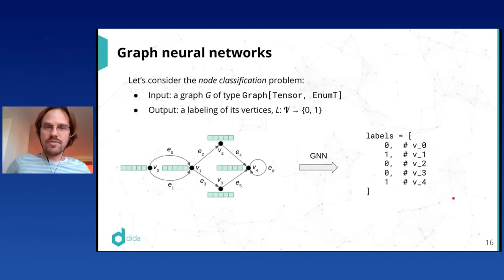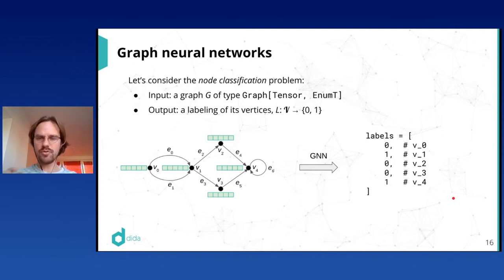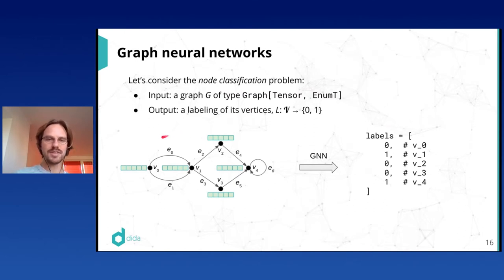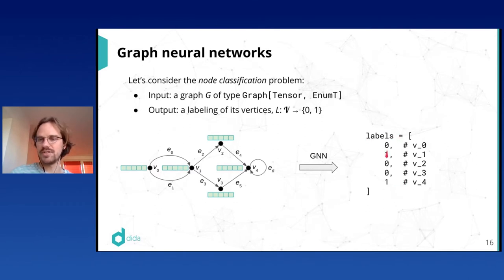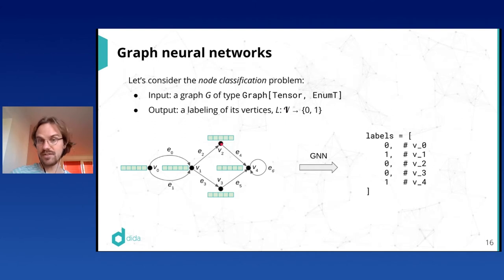Now we can get to graph neural networks. To discuss this, I'll fix one kind of problem: the node classification problem. We give as input a graph, and we want to output a labeling of the vertices — let's say a binary classification, a function from vertices to {0, 1}. Equivalently, given an enumeration of vertices, output a list of zeros and ones where the i-th entry corresponds to the i-th vertex.